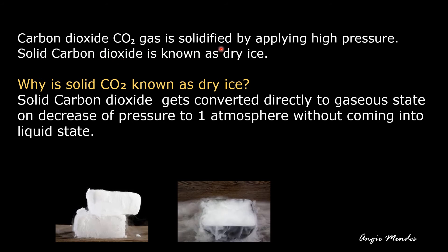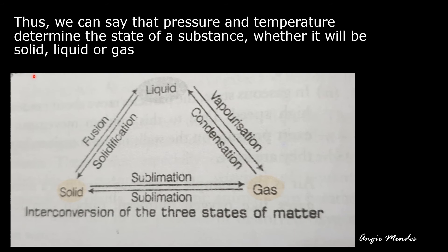Carbon dioxide gas can be solidified by applying high pressure, and solid carbon dioxide is known as dry ice. Solid carbon dioxide converts directly to the gaseous state without undergoing a change into the liquid state. On decrease of pressure to one atmosphere, it goes directly from solid to gas — hence it is called 'dry ice,' because unlike regular ice it does not pass through the liquid (wet) state. Thus pressure and temperature together determine whether a substance will be solid, liquid, or gas.